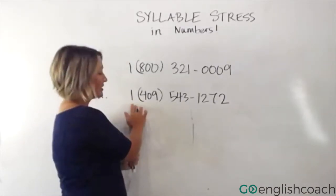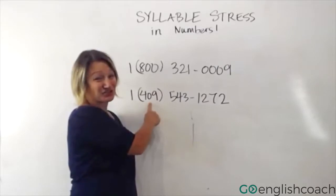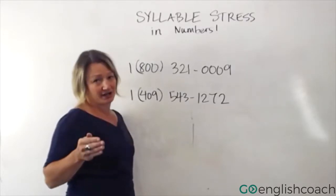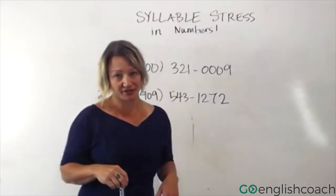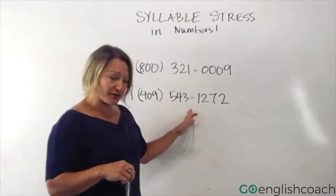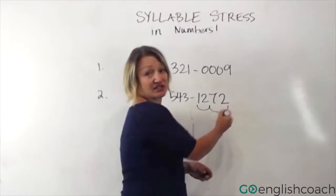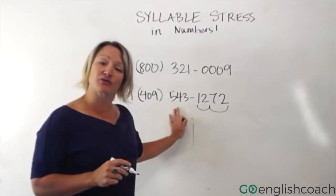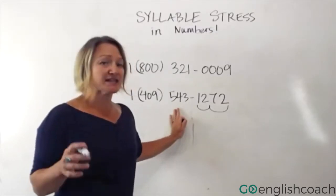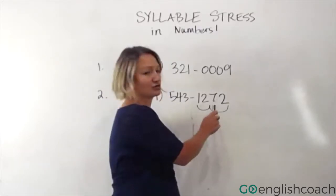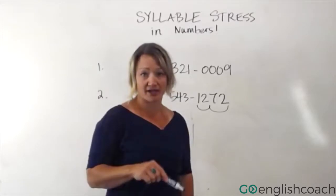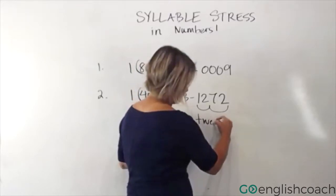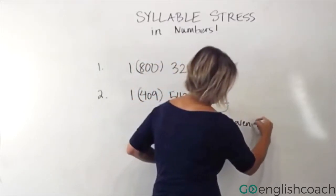So this one would be 1-4-0-9. In English we can say 'O' in numbers — many people will say '4-oh-9.' So that's just a common English thing. For example: 4-0-9, 5-4-3, 12-72. You could say each individual number: 1-2-7-2, or group them: 12-72, 12-72. Either way works, with that same rhythm.